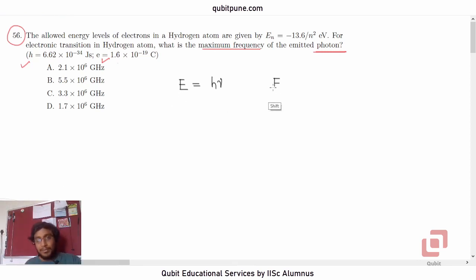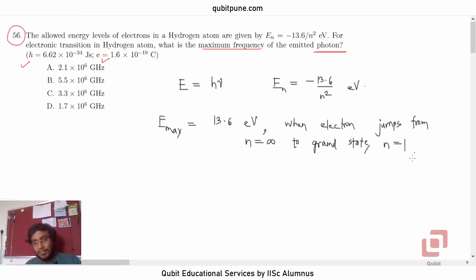And the second one is already given in the problem: En is negative 13.6 upon n squared electron volt. Now, what is the maximum energy difference? E max is actually 13.6 eV itself when electron jumps from n equal to infinity to ground state, that is n equal to 1. That's the maximum difference that you can have, energy difference. But there is a problem. This is an electron volt, so we have to first convert it to joules.